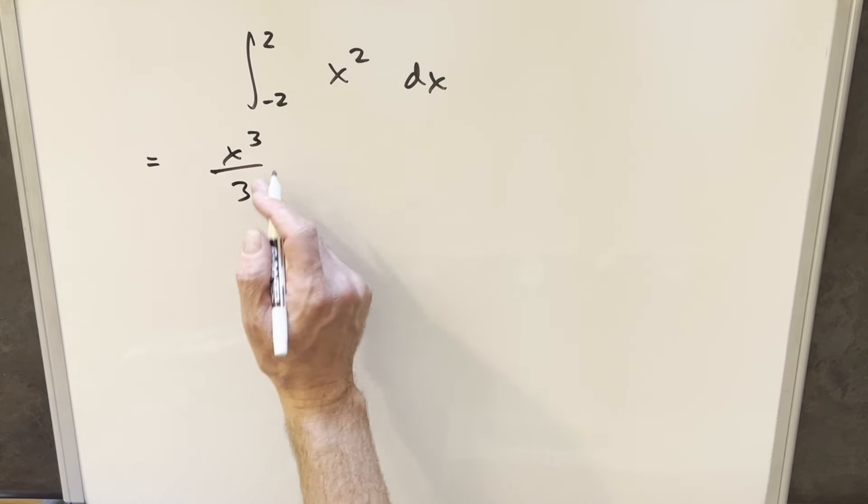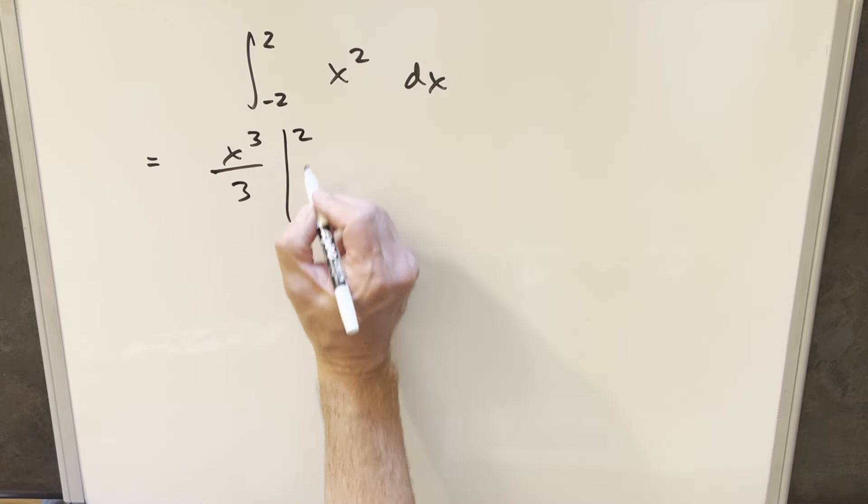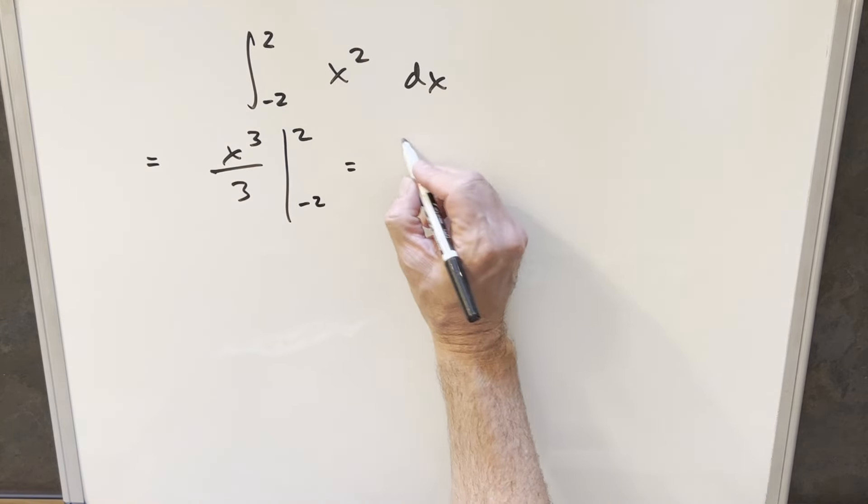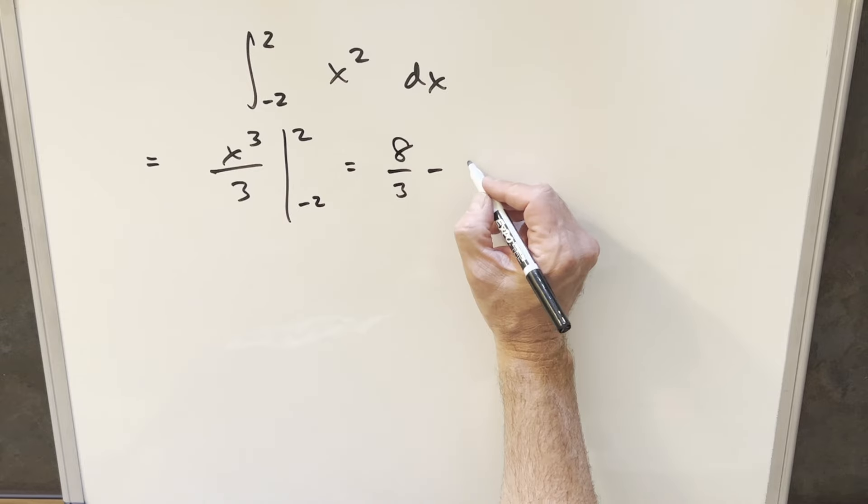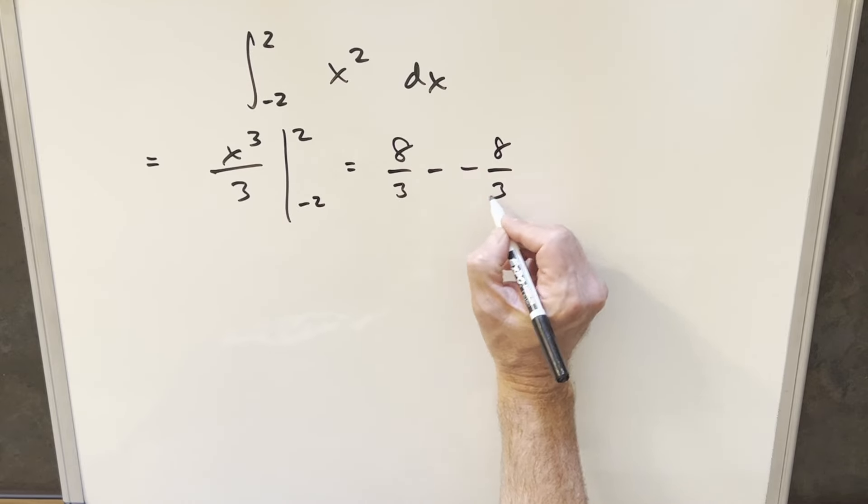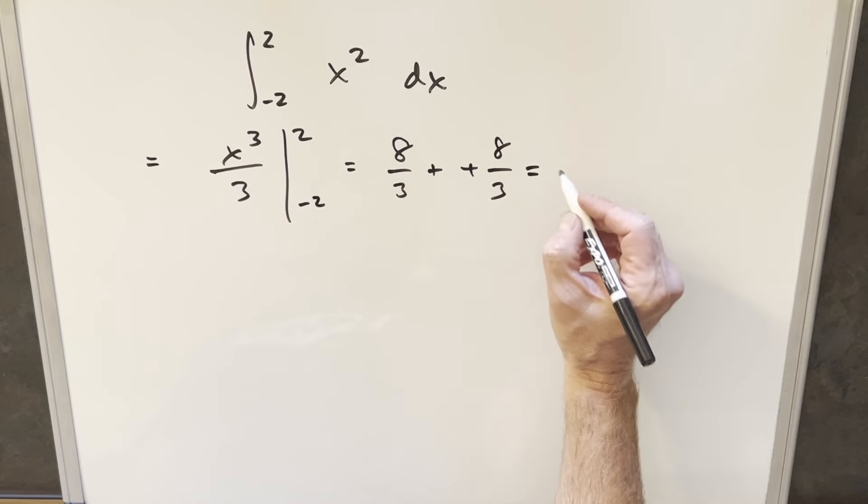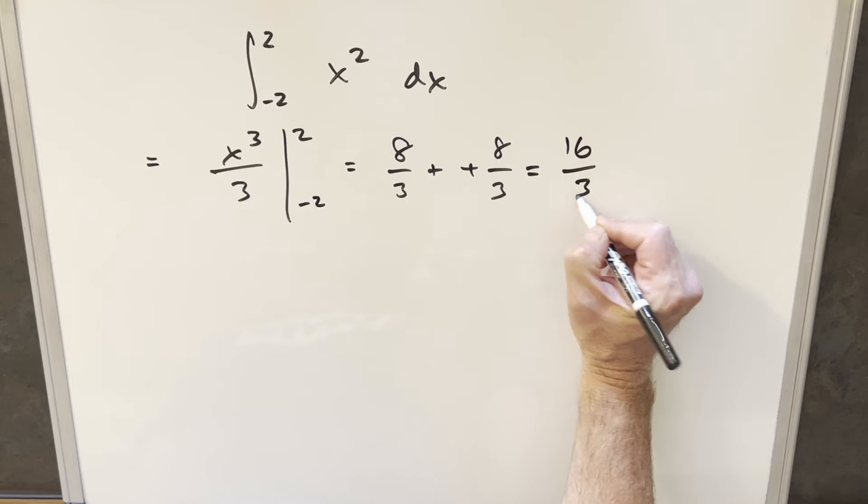So we're doing power rule. We get x cubed over 3. Evaluate. Plugging in 2, we're going to have 8 over 3 minus... This minus 2 is going to give me a minus 8 over 3. Minus times minus is plus. And we have our solution 16 over 3.